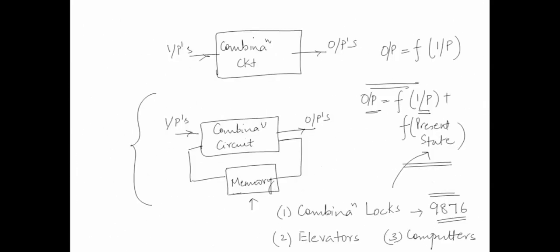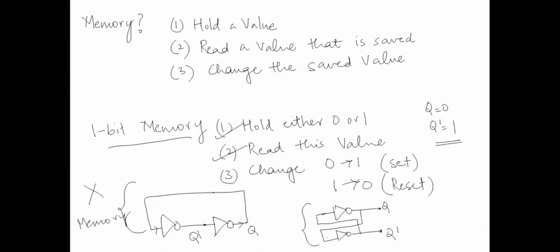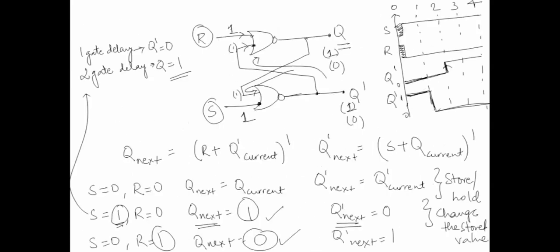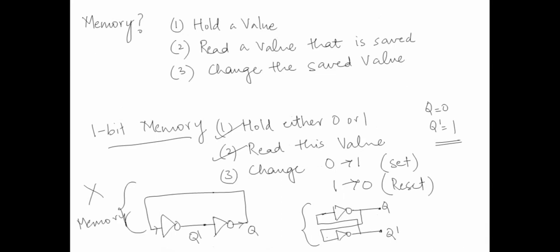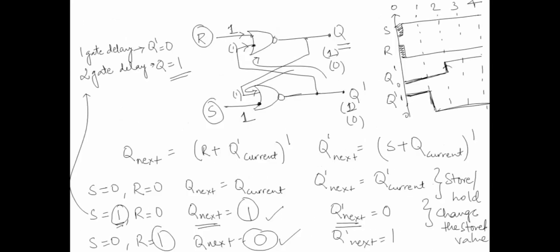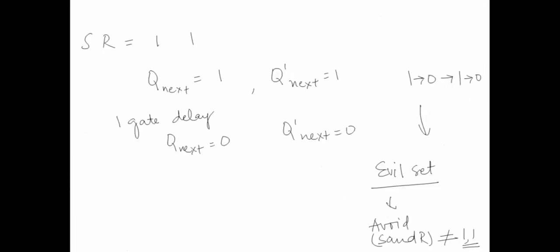We began with a comparison of combinational and sequential circuits, spoke about properties of memory, saw that NOT gates don't satisfy all memory properties, then replaced them with NOR gates with R and S inputs — set and reset. We saw different combinations and the evil state where both inputs are one. Now let's see a variation: the S-bar R-bar latch, based on NAND gates instead of NOR gates.